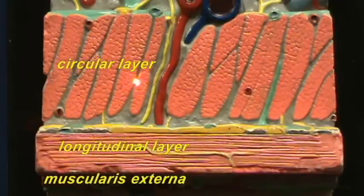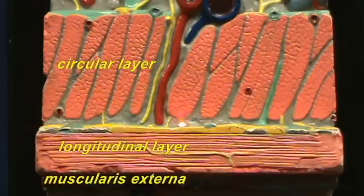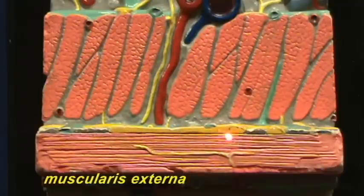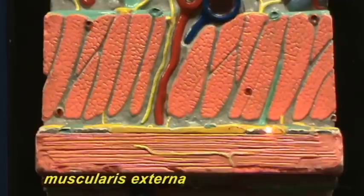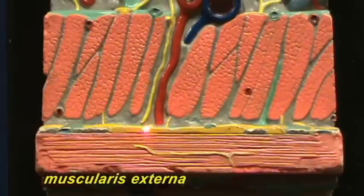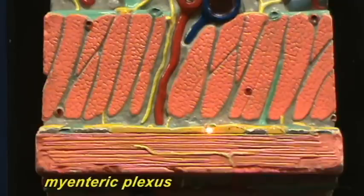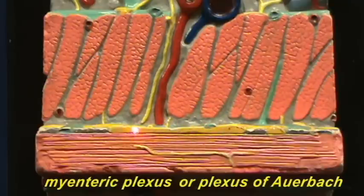Also present in this layer is another plexus of nerves. You can see the cell bodies and ganglia of this plexus here in between the circular and the longitudinal layer. This plexus is referred to as the myenteric plexus, also known as the plexus of Auerbach.